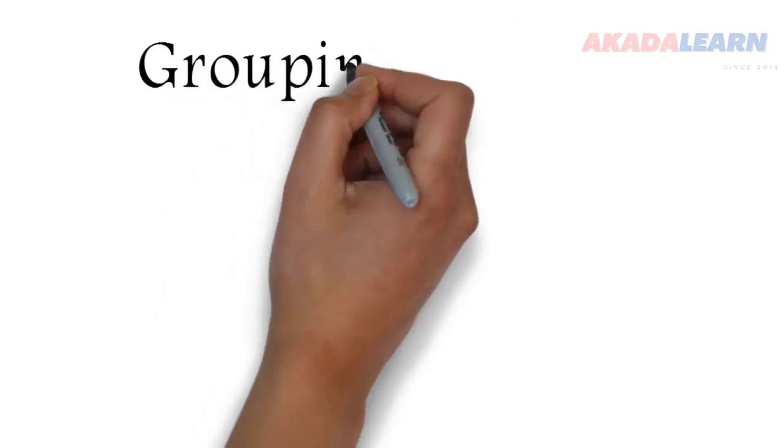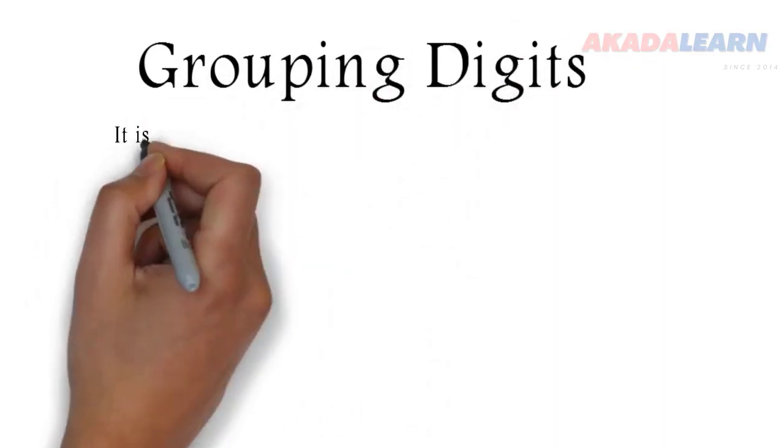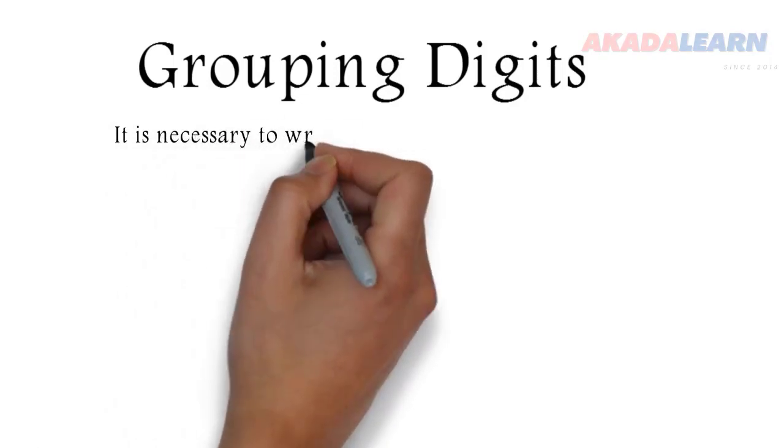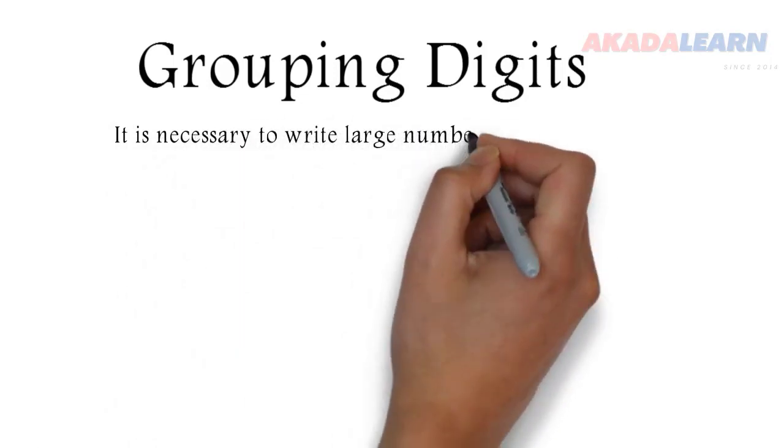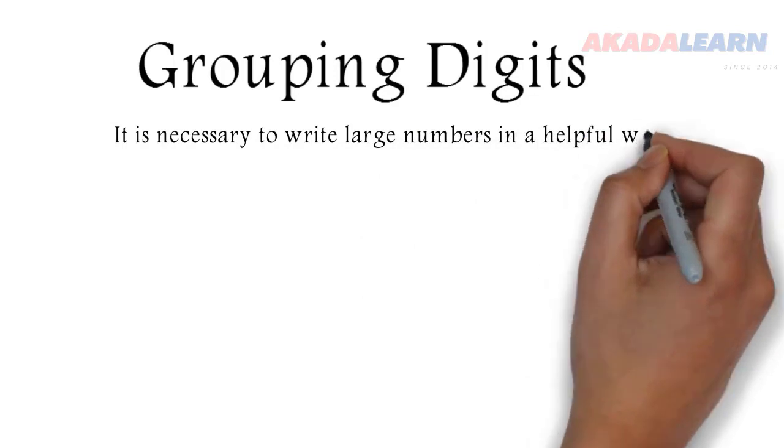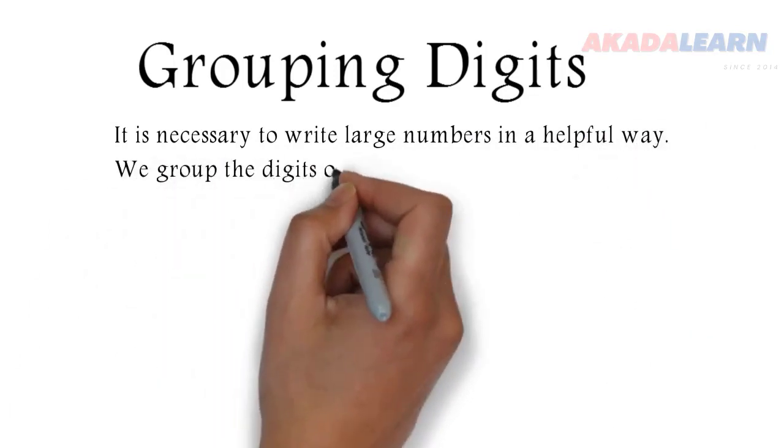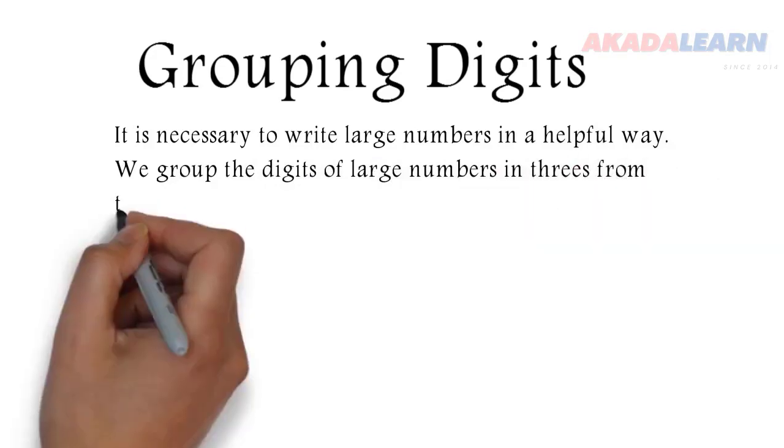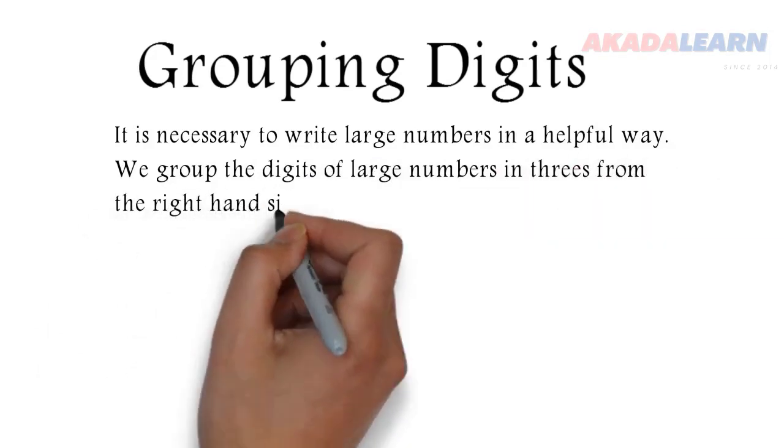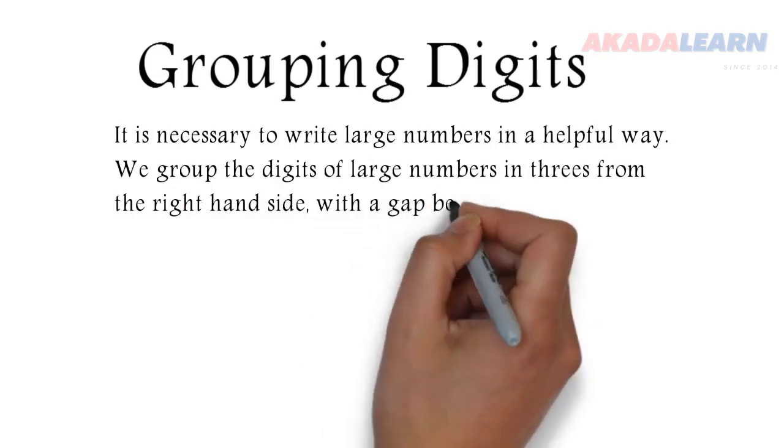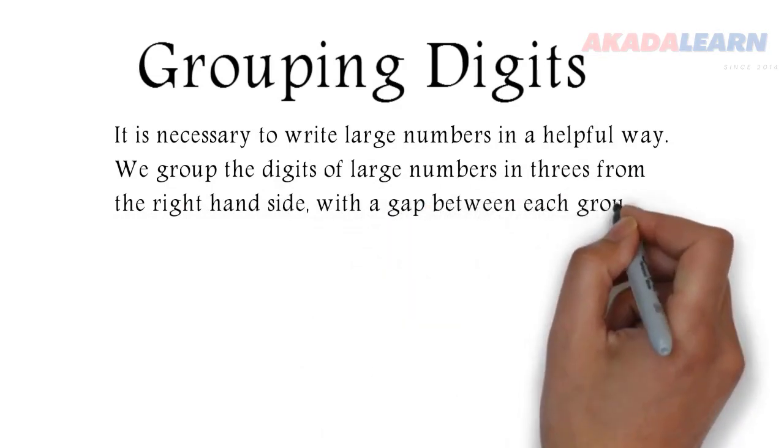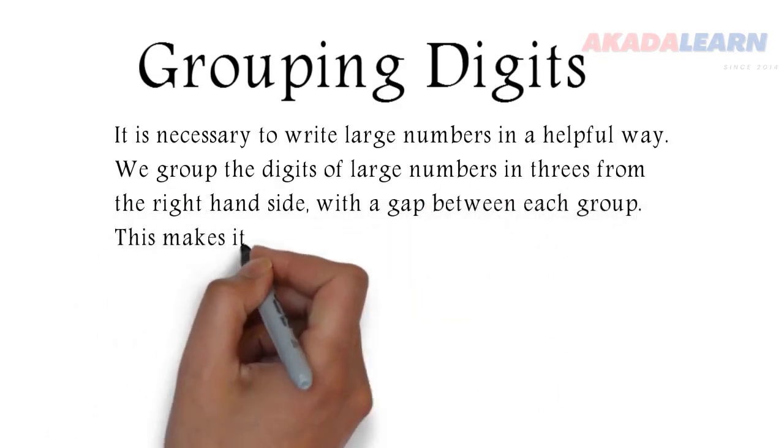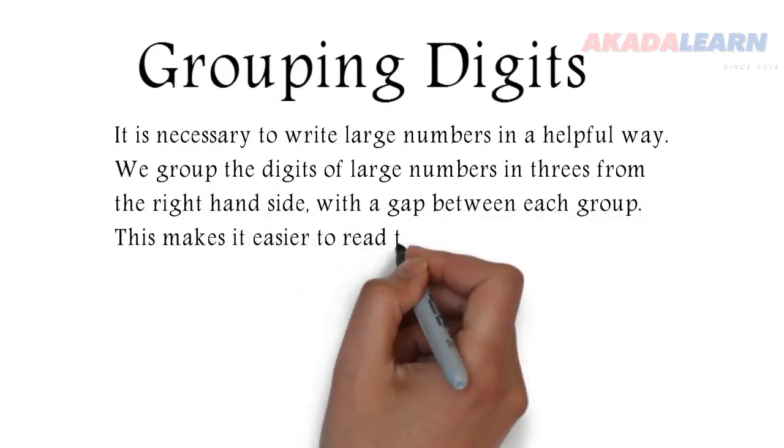Now we move on to grouping digits. It is necessary to write large numbers in a helpful way. We group the digits of large numbers in threes from the right-hand side with a gap between each group. This makes it easier to read the number.